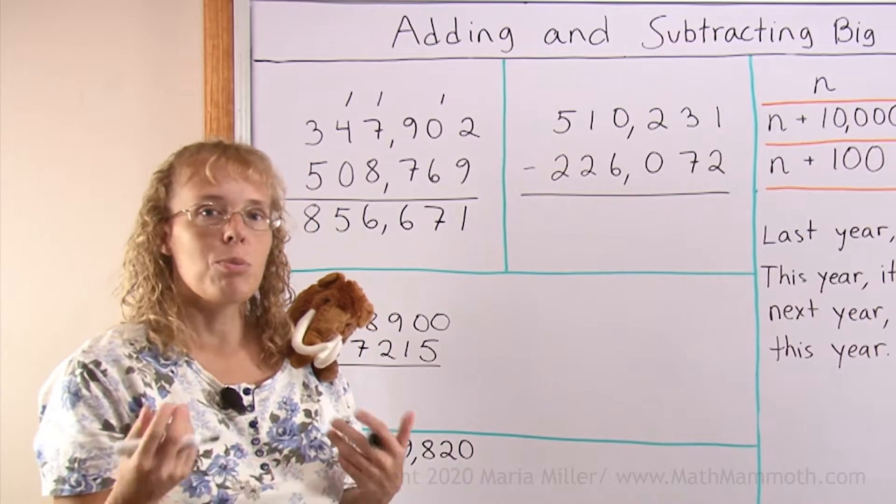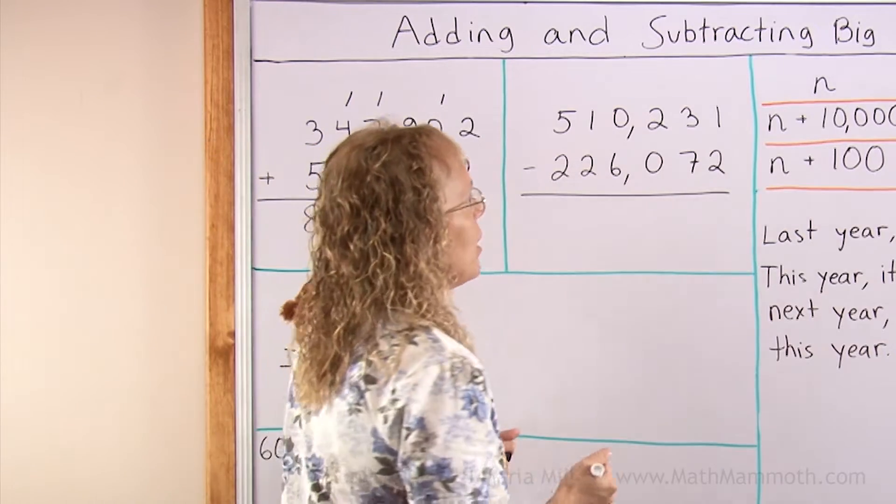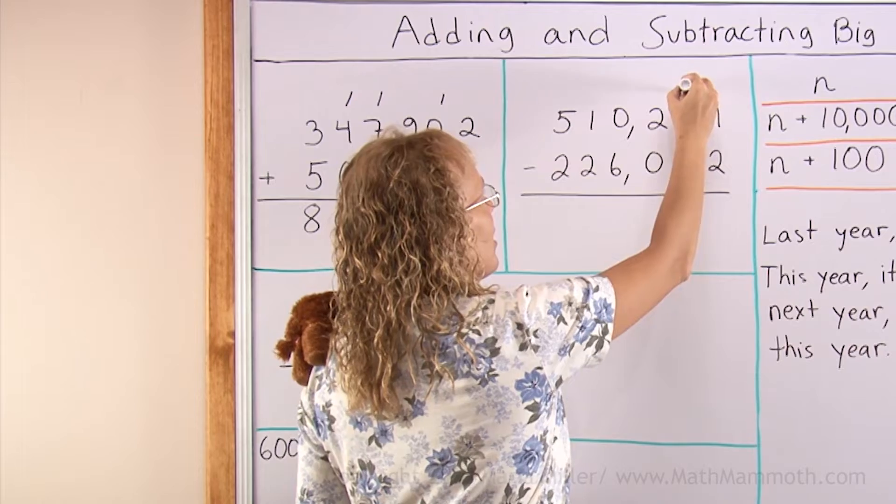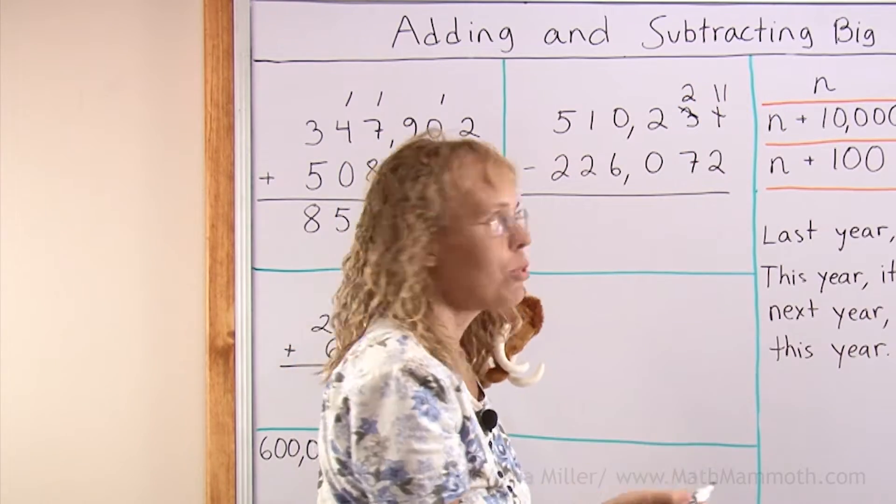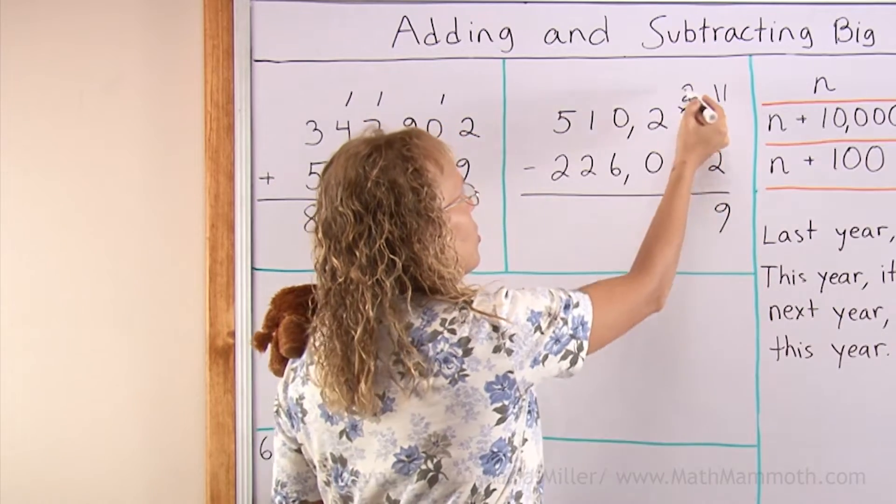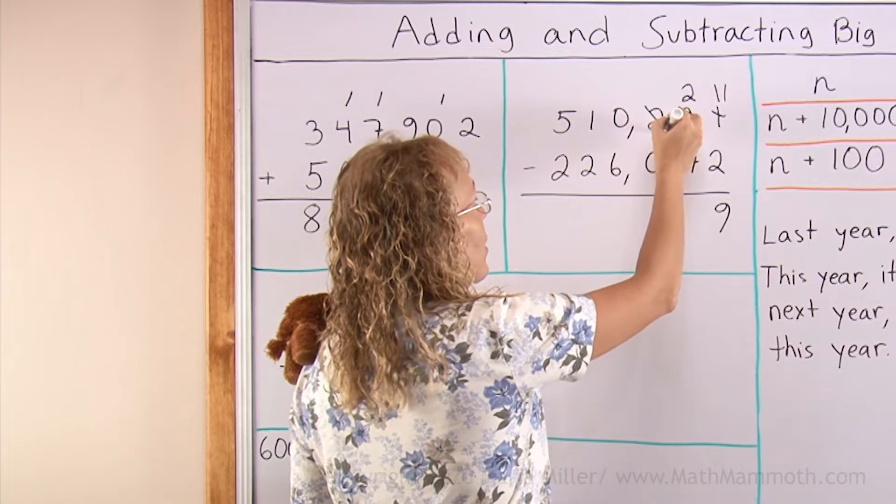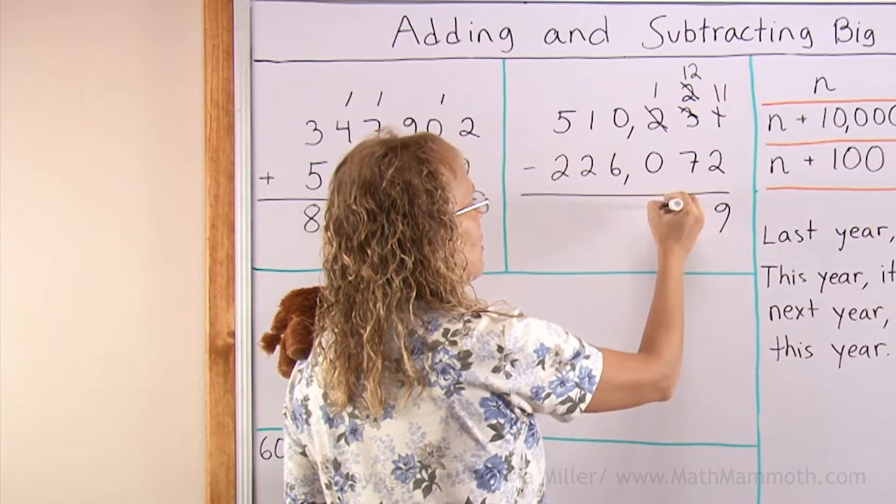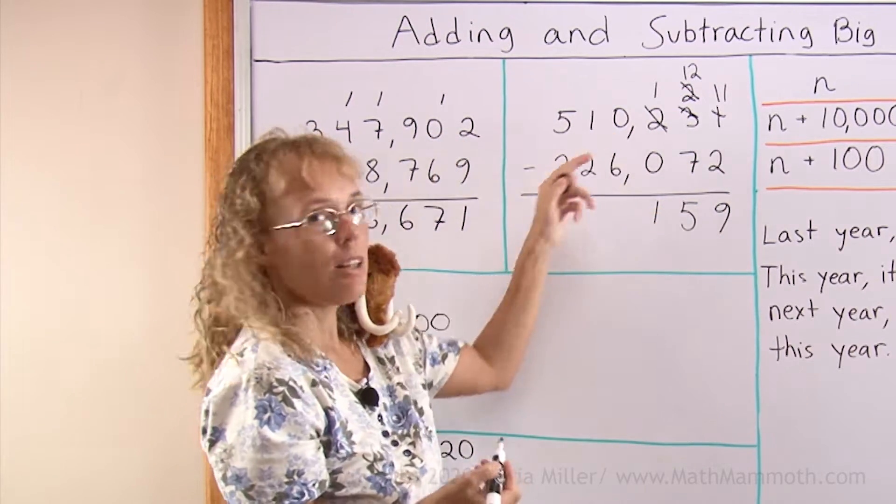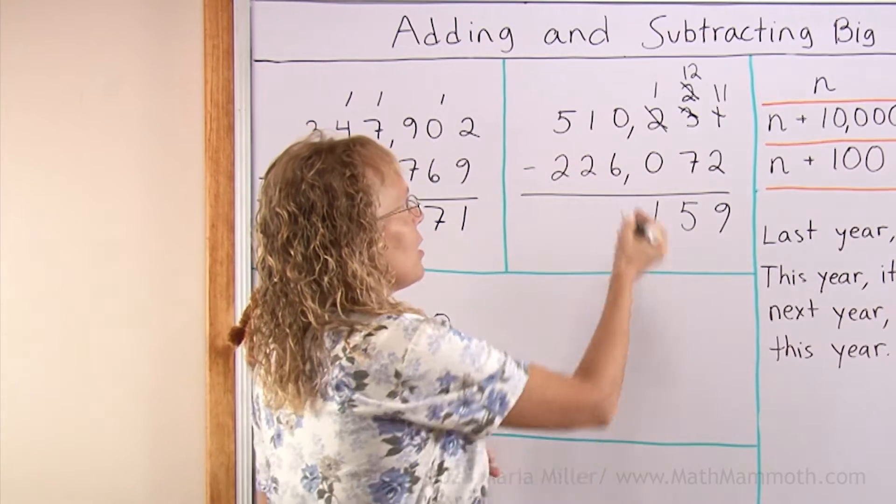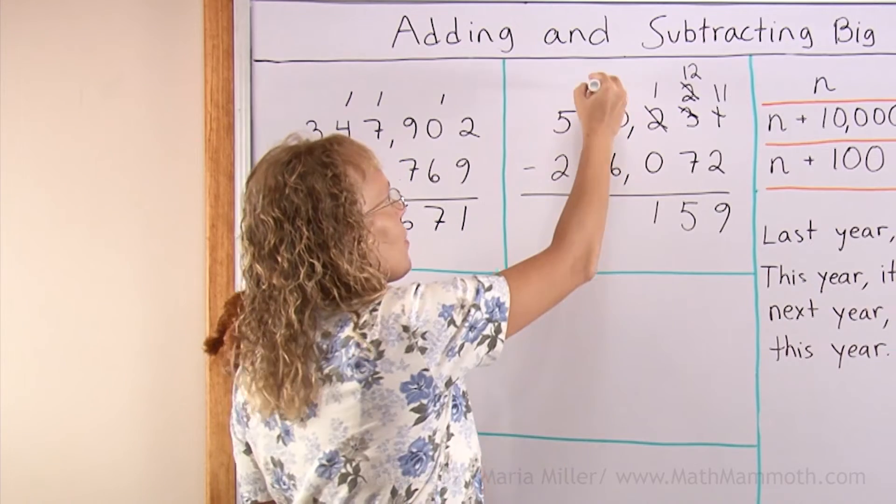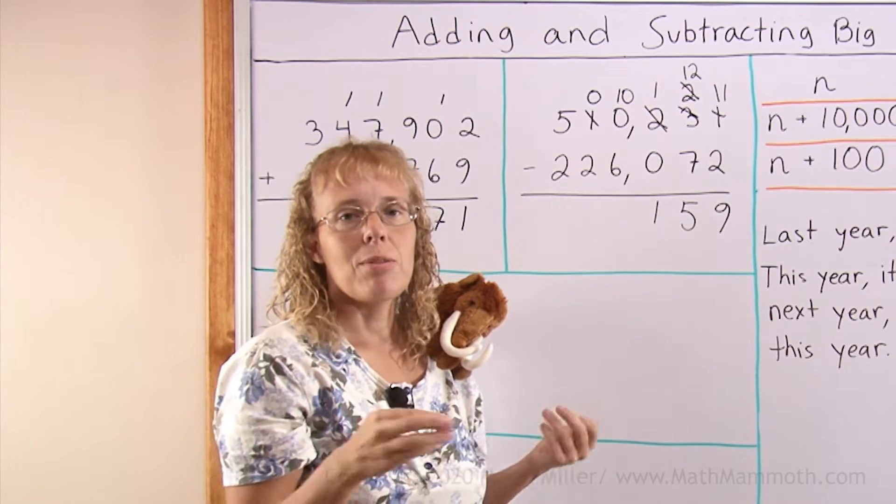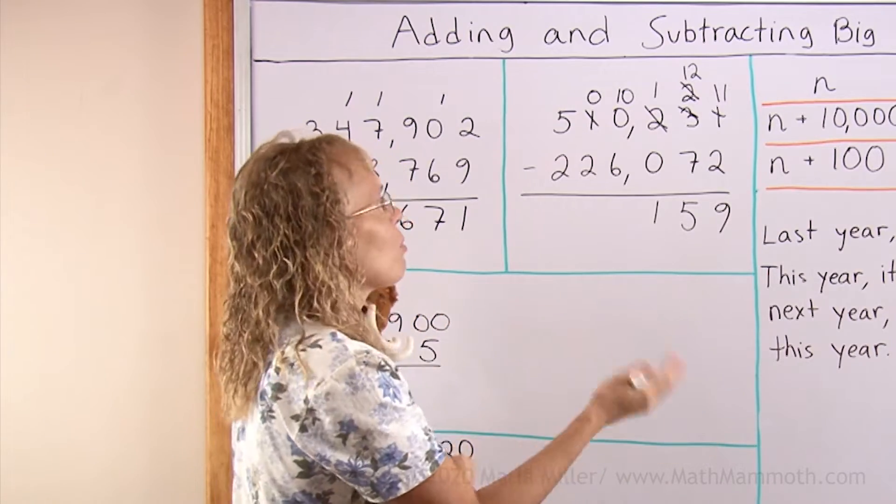Subtraction works the same way too. You might have to borrow or you might have to regroup. For example, here. 1 take away 2. You cannot do it. So, we borrow from here and leave 2 tens here. And then we get 11 here. 11 minus 2 is 9. Again, 2 take away 7. You cannot do it, so you borrow or you regroup. Leave 100 here and 12 here. 12 minus 7 is 5. Here you have 1 minus 0 is 1. Then we just go on the same way.